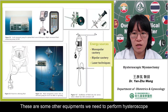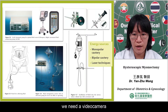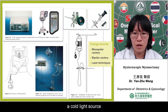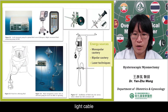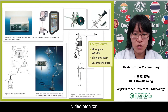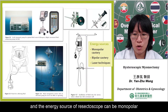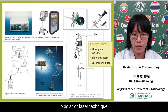These are some other equipment we need to perform a hysteroscopy: a video camera, a cold light source, light cable, endoscope and accessories, video monitor, distension media, and irrigation and suction pumps. The energy source of the hysteroscopy can be monopolar, bipolar, or laser techniques.